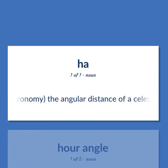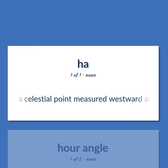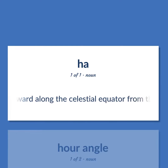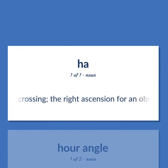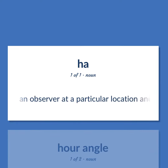Astronomy. The angular distance of a celestial point measured westward along the celestial equator from the zenith crossing — the right ascension for an observer at a particular location and time of day.